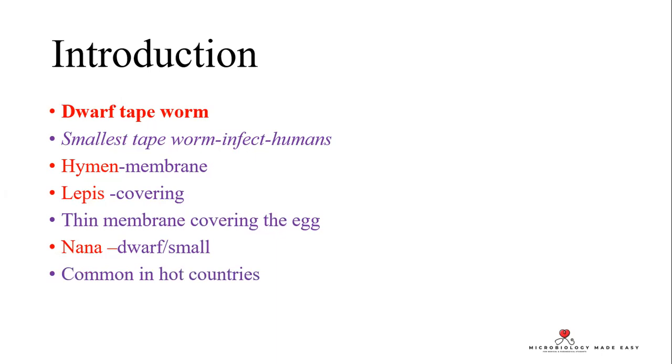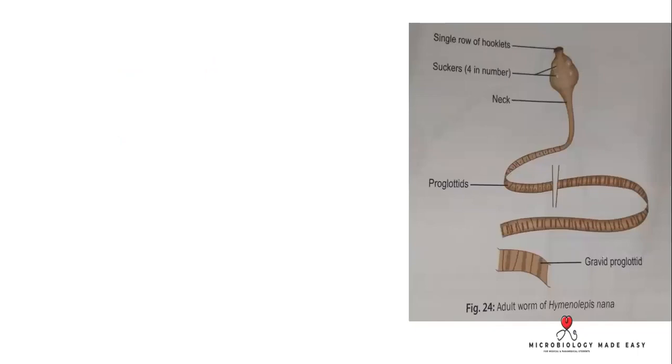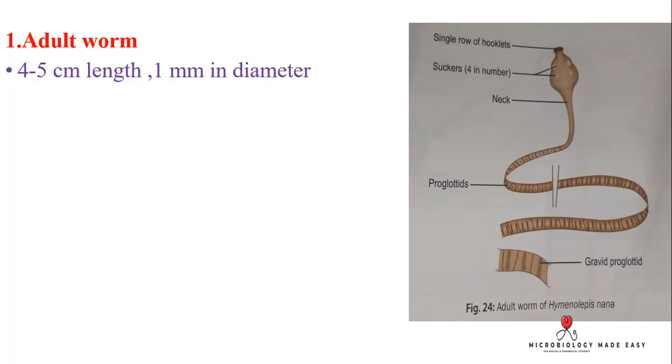That is brief information about the dwarf tapeworm, Hymenolepis nana. Regarding morphology, we describe the adult worm and the egg. The adult worm has the same features as Taenia solium and Taenia saginata, comprising a scolex, neck, and strobila. The total length is 4.5 centimeters and 1 mm in diameter.